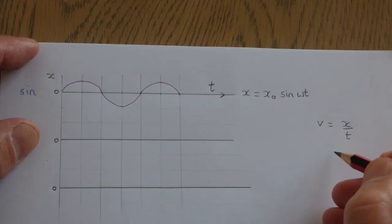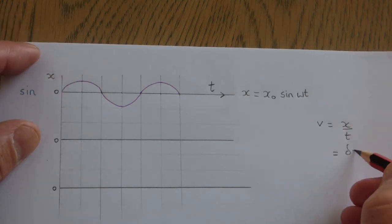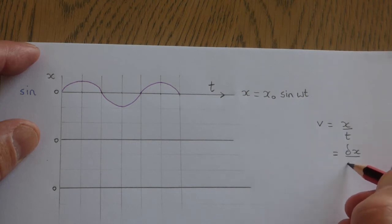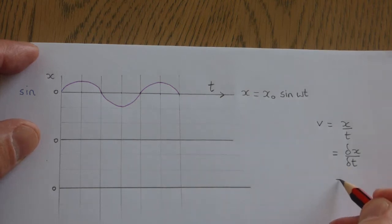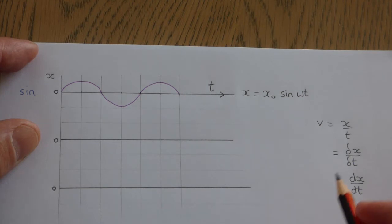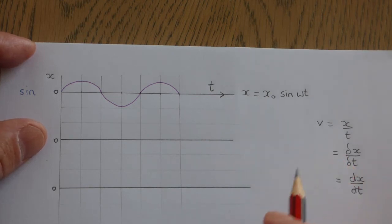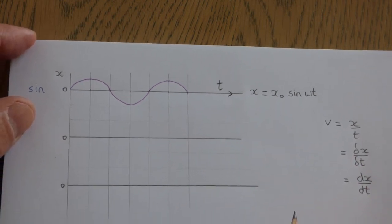Because the gradient is changing, you should take a small value of x and a small value of time, represented with deltas. At A-level, we take that to an extreme — an infinitely small change in displacement over an infinitely small change in time — and we write that as dx/dt. In A-level maths, this is called calculus and is called differentiation. Differentiation is really a gradient-finding process.